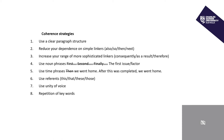Other strategies we can use to improve coherence include reducing our dependence on simple linkers. Simple linkers are words like also, so, then and next. It's important to note that we will find simple linkers in academic texts, but perhaps not as many as we expect. At the same time, we may want to increase our range of more sophisticated linkers, such as consequently, as a result, and therefore.